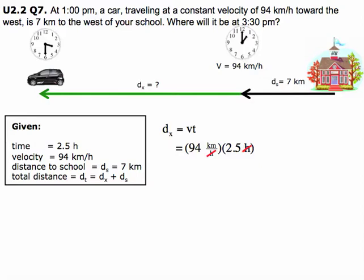And then what we're going to do first is cancel out the hours, and so we notice that our only units left is km, which is good because we're looking for distance. And so our distance, the green arrow, the dx, is 235 km west from the starting point. And the starting point is right here at 1 o'clock, and the starting point is 7 km west of the school, so we need to know how far is the car from the school.